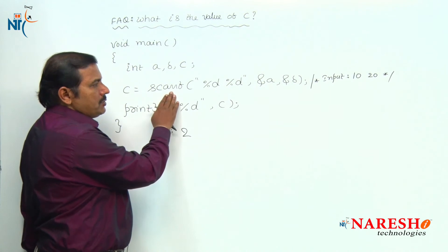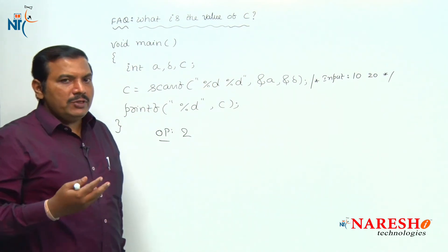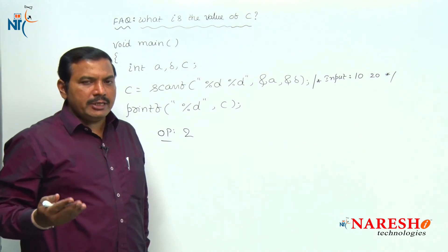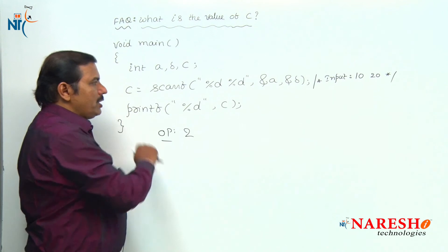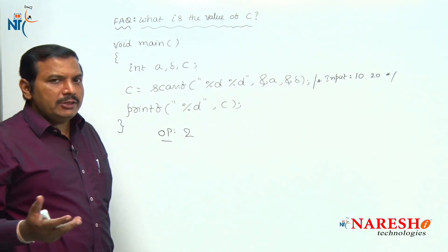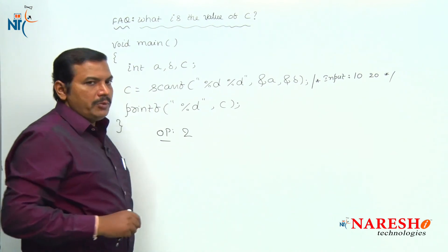Hence, the scanf function returns the value 2 into the variable c. If the scanf function is reading one input value from the user, it returns one into variable c. If it is reading three input values from the user, three is returned into variable c.